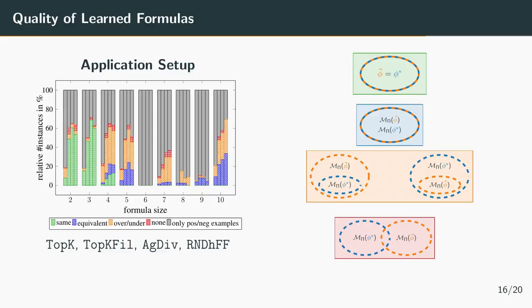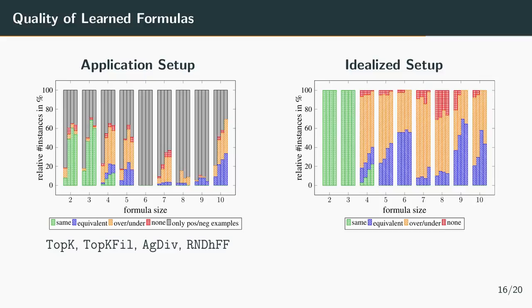Now let's take a look at the same evaluation for the idealized setup. Here you can see that for small formulas we can always learn the same formula and for larger ones we often learn equivalent ones or almost always an under or over approximation. If you compare the two results you can clearly see that the bottleneck of the approach is the fact that in many cases the planners aren't able to generate positive and negative examples.